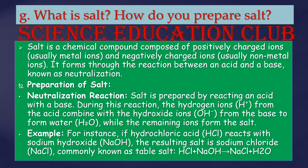What is salt? How do you prepare salt? Salt is a chemical compound composed of positively charged ions and negatively charged ions. It forms through the reaction between an acid and a base, known as neutralization. Salt is prepared by reacting an acid with a base. During the reaction, hydrogen ions from the acid combine with hydroxide ions from the base to form water, while the remaining ions form the salt. For instance, hydrochloric acid reacts with sodium hydroxide to produce sodium chloride, commonly known as table salt.